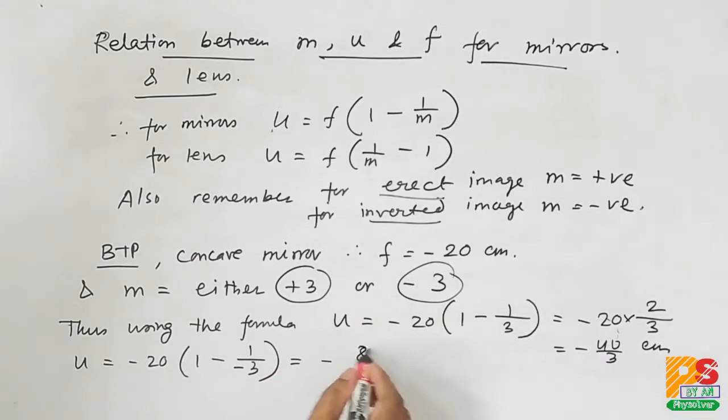You will get second value of u as minus 80 by 3 centimeters. That's the two answers for concave mirror.